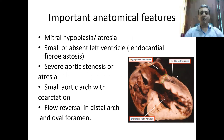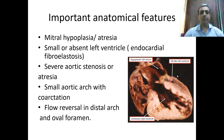The important anatomical features are mitral hypoplasia or atresia, a smaller upset left ventricle with endocardial fibroelastosis, severe aortic stenosis or atresia, a small aortic arch with coarctation, flow reversal in the distal arch and foramen ovale. Arch interruption is also known to be associated with hypoplastic left heart syndrome.